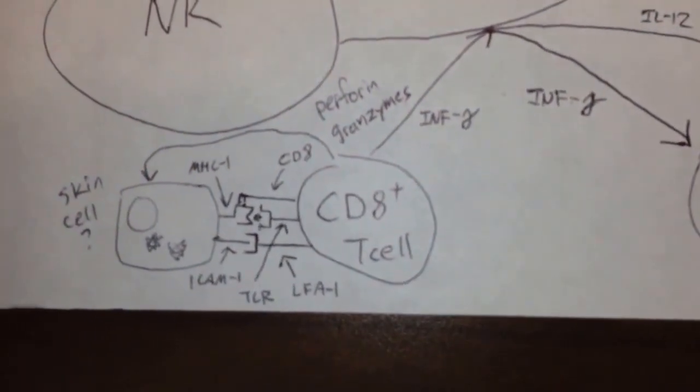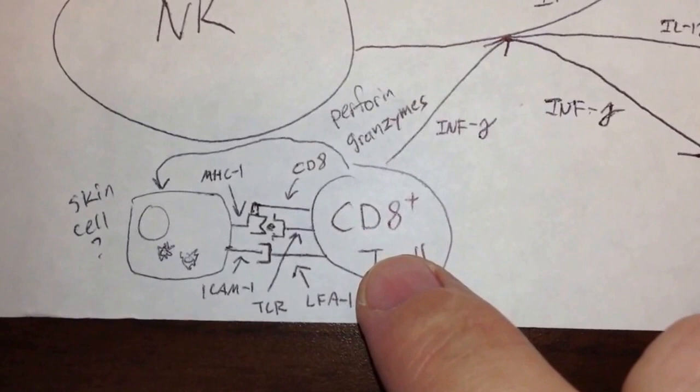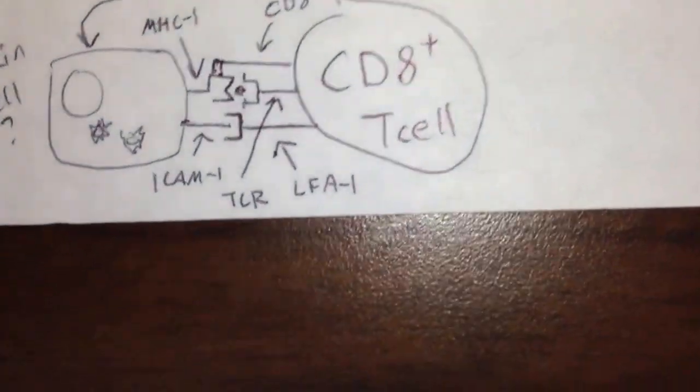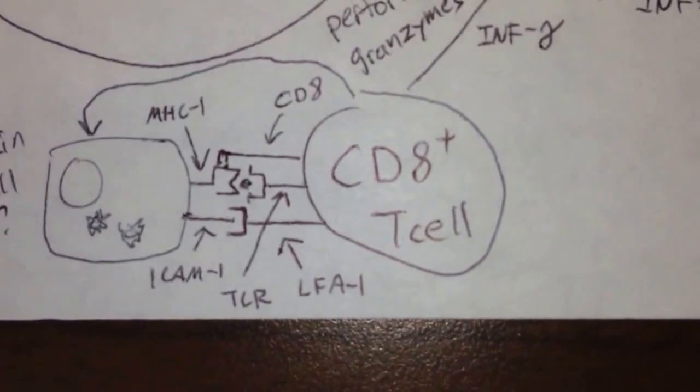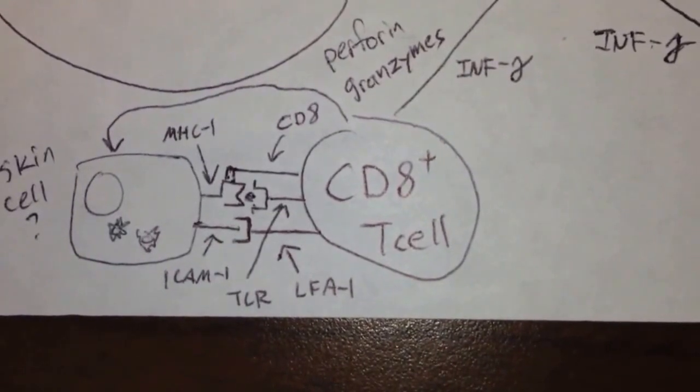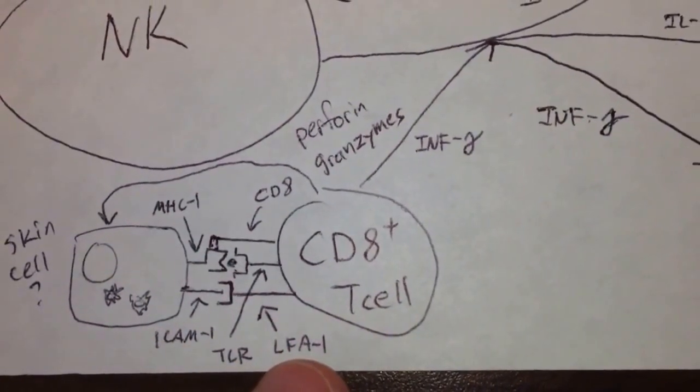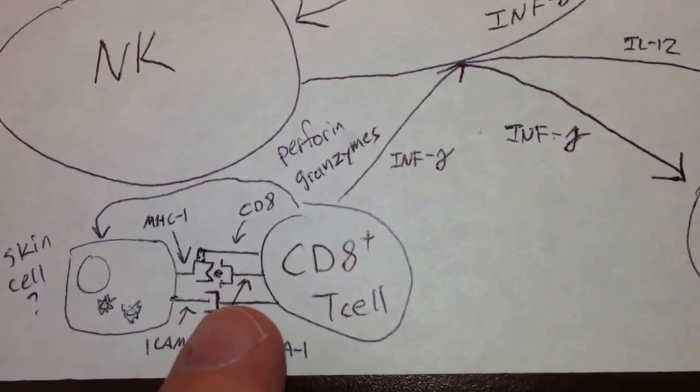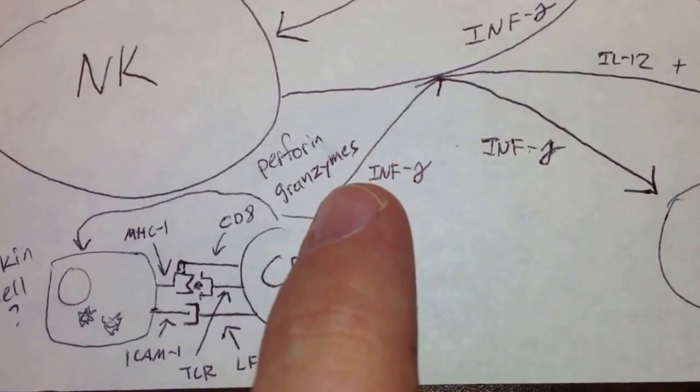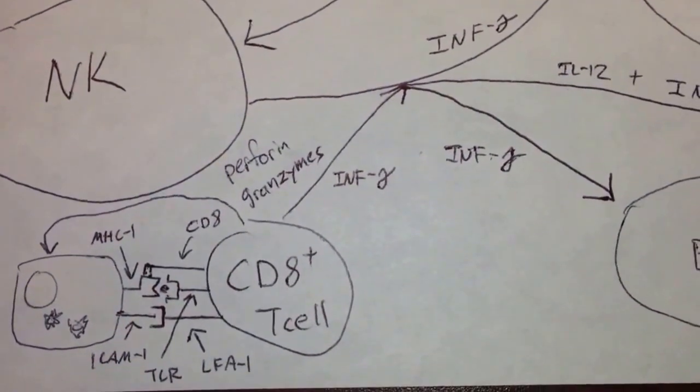If we zoom in here, we can see that there is a CD8 T cell that also makes interferon gamma. So everybody likes to make interferon gamma. And this CD8 cell is bound to, we're going to say this is a skin cell that's been infected by viruses or something. And if we look down, we can see there's some receptors there. The skin cell has an MHC class 1 and an ICAM. And the CD8 T cell has a T cell receptor and LFA1 and CD8. And so they're all bound together. And then the CD8 cell knows that it's okay to go ahead and try and kill this cell. So it's going to do that by releasing perforin and granzymes that are going to go over here and kill that skin cell that's infected and hopefully save the day.